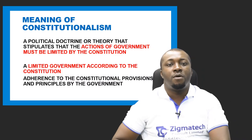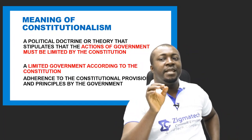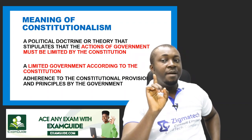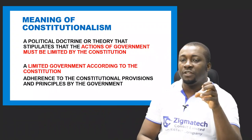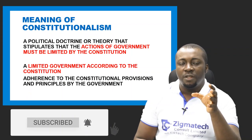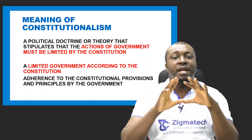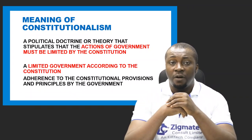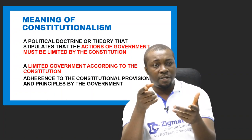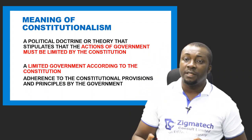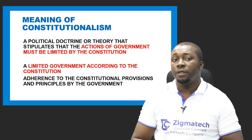Now let's look at constitutionalism. Constitutionalism is a political doctrine or theory that stipulates that the actions of government must be limited by the constitution — a limited government according to the constitution. It is also defined as adherence to the constitutional provisions and principles by government. It is an ideology that stipulates that every government is under the constitution and must operate according to its provisions. While the constitution itself is the fundamental law by which the state is governed, constitutionalism is the strict adherence to its provisions in the conduct and activities of government.